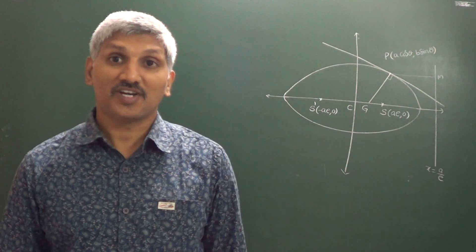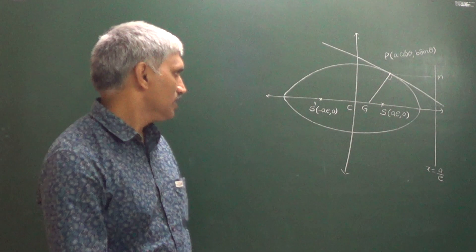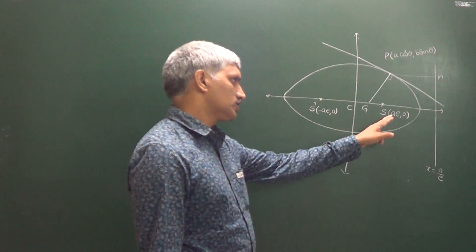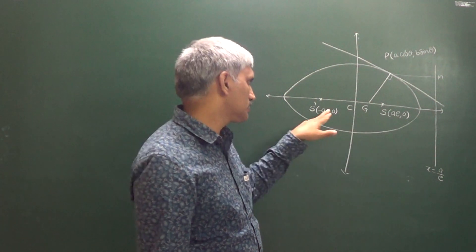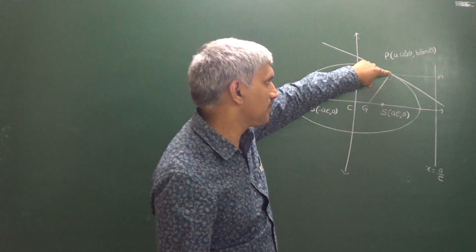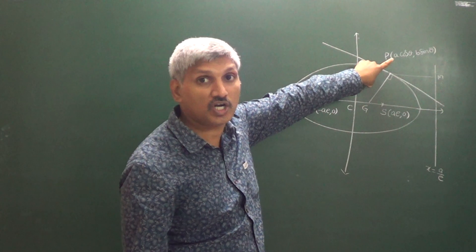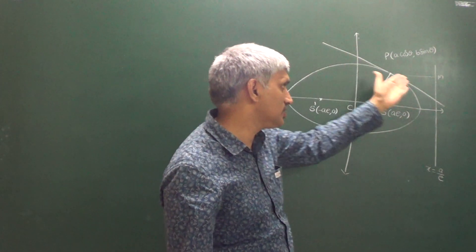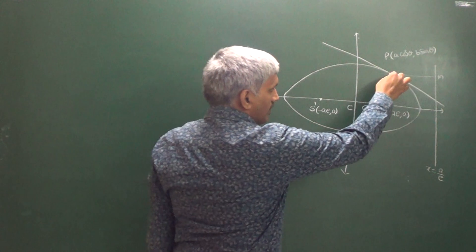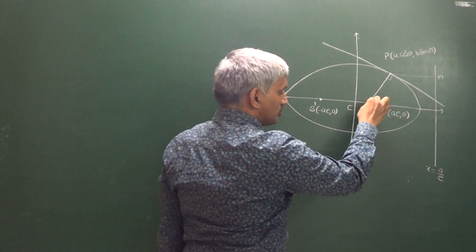Let's discuss the reflection property of an ellipse. This is an ellipse with focus S at (AE, 0) and S' at (-AE, 0). At a point P, I took a parametric point (A cosθ, B sinθ). A tangent is drawn, and the normal meets the axis at a point G.